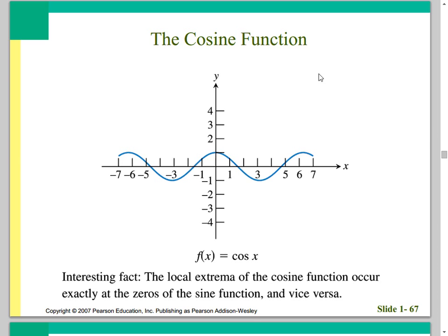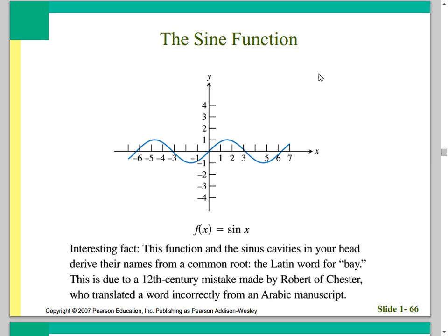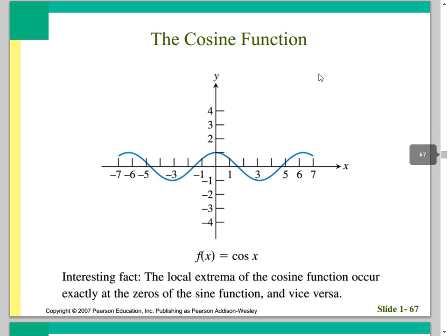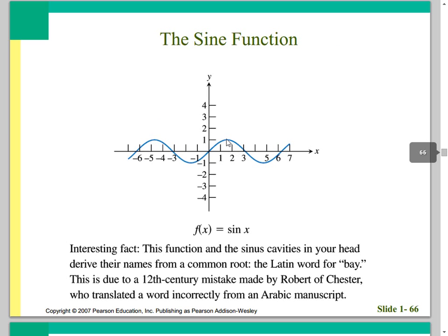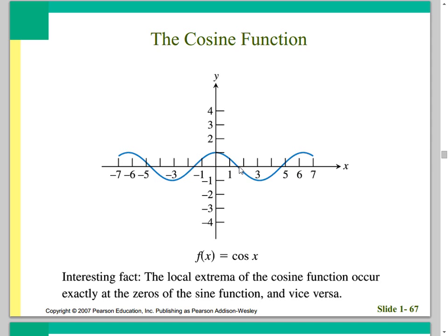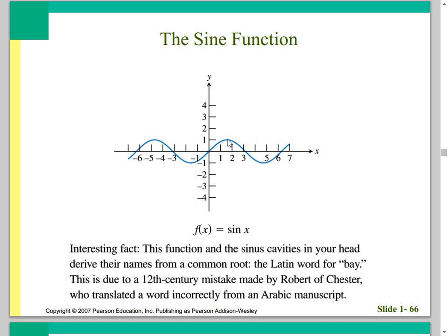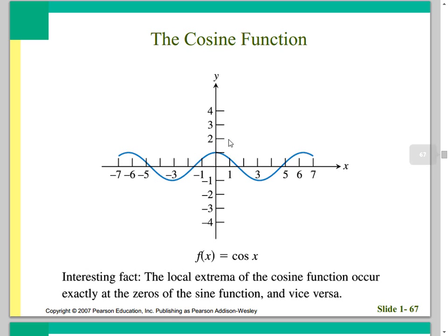The cosine function is an even function. If you take the sine function and slide it a little to the left, you get the cosine function. Cosine and sine are called co-functions — cosine is the co-function of sine, and we'll talk more about that in Chapter 4. The local extrema of the cosine function occur at the zeros of the sine function, and vice versa. Sometimes we use a cosine function to fit data better because it starts at 1 when x equals 0.